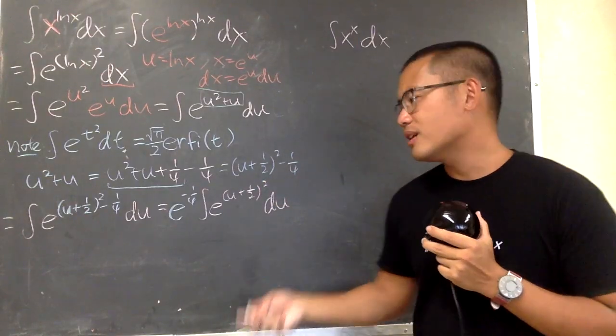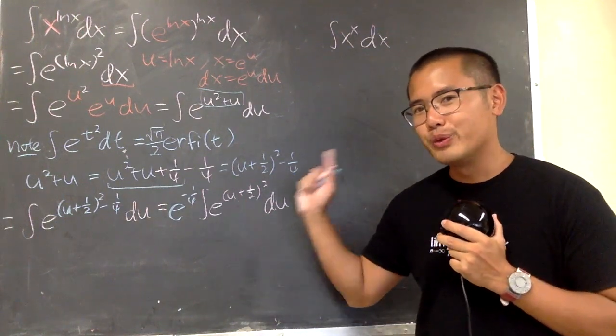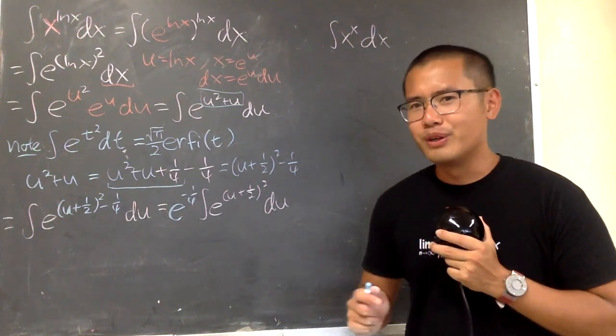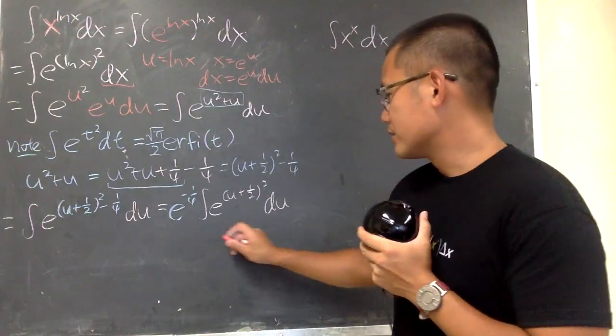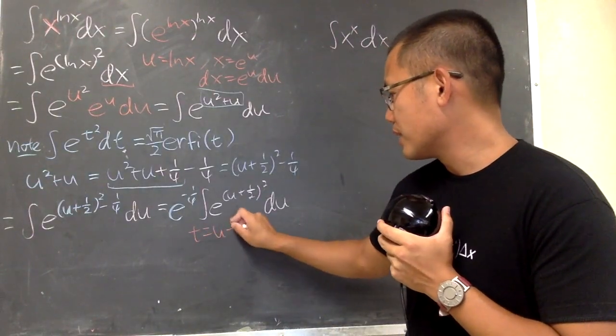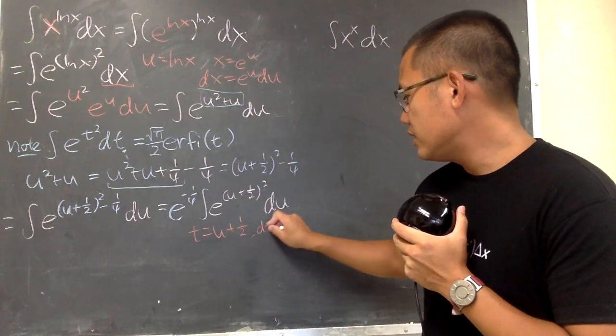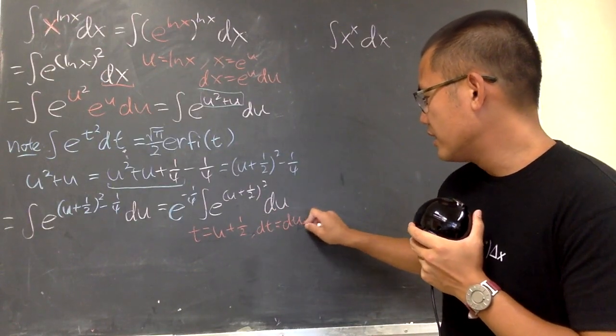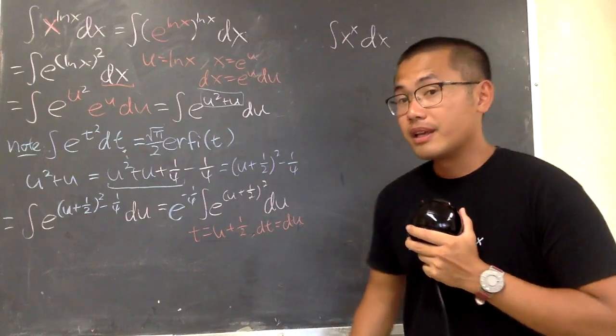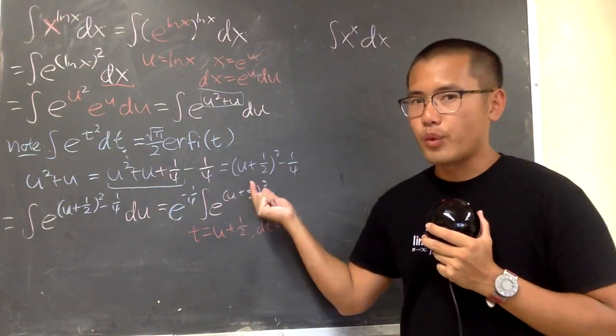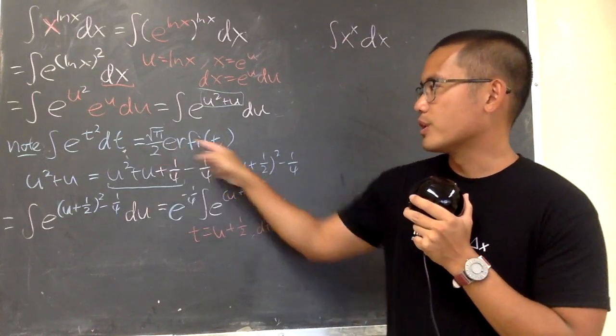You can guess it. Of course, in this case, we let t equal to u plus 1 over 2. dt is the same as du, so it's very nice. There's nothing crazy we have to do. This is just t squared right here.